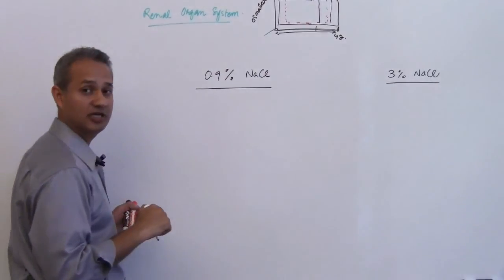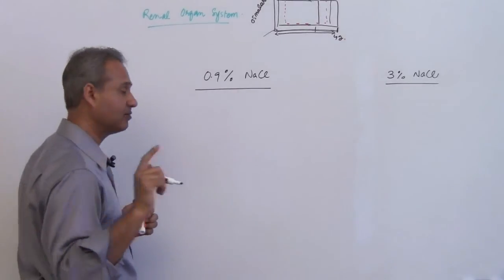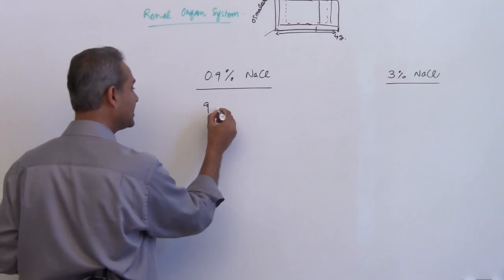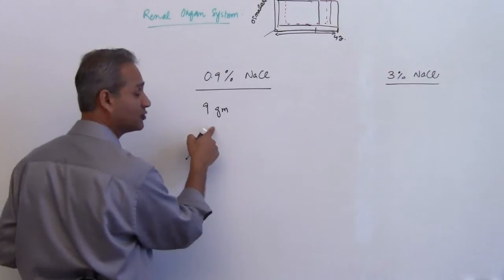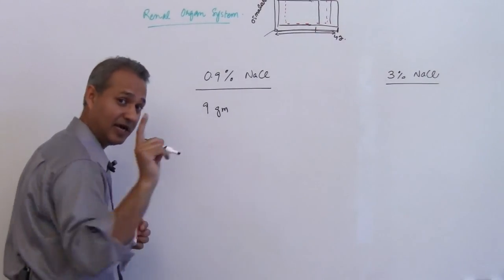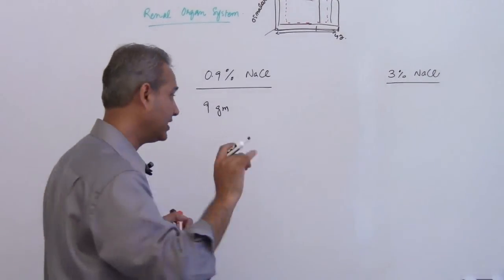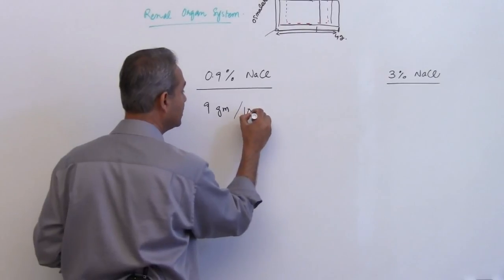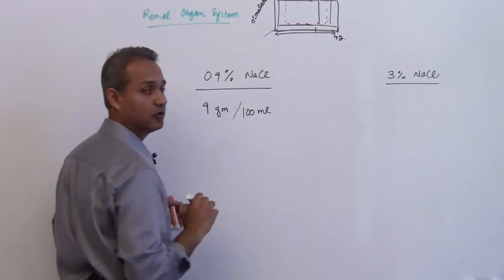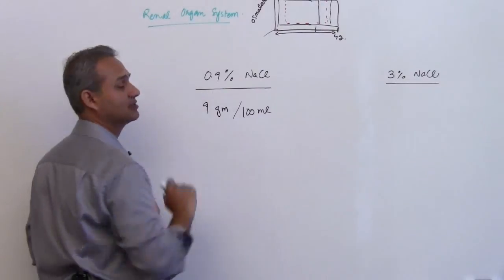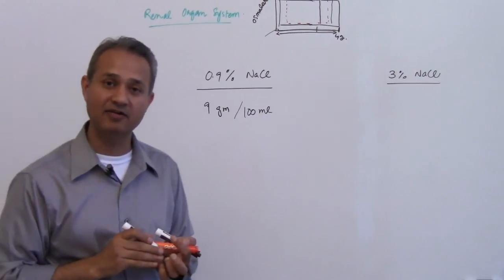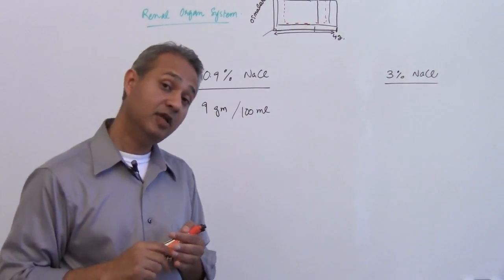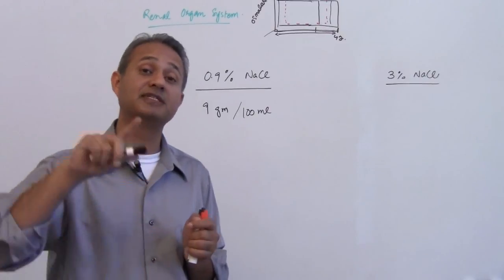0.9 percent sodium chloride: what does that mean? That means 9 grams of sodium chloride in 100 milliliters of fluid. That is what this means. So the first thing is to understand it is percent.